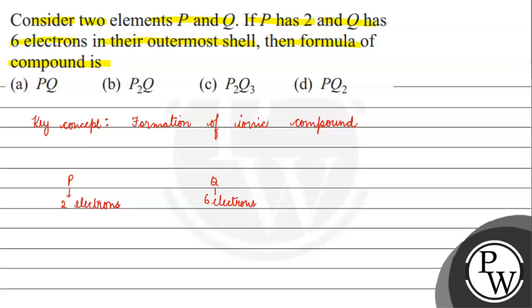If P gives its outermost electrons to Q, then Q will reach a stable state. If Q takes those 2 electrons from P, then Q will have 8 electrons in its outermost shell.